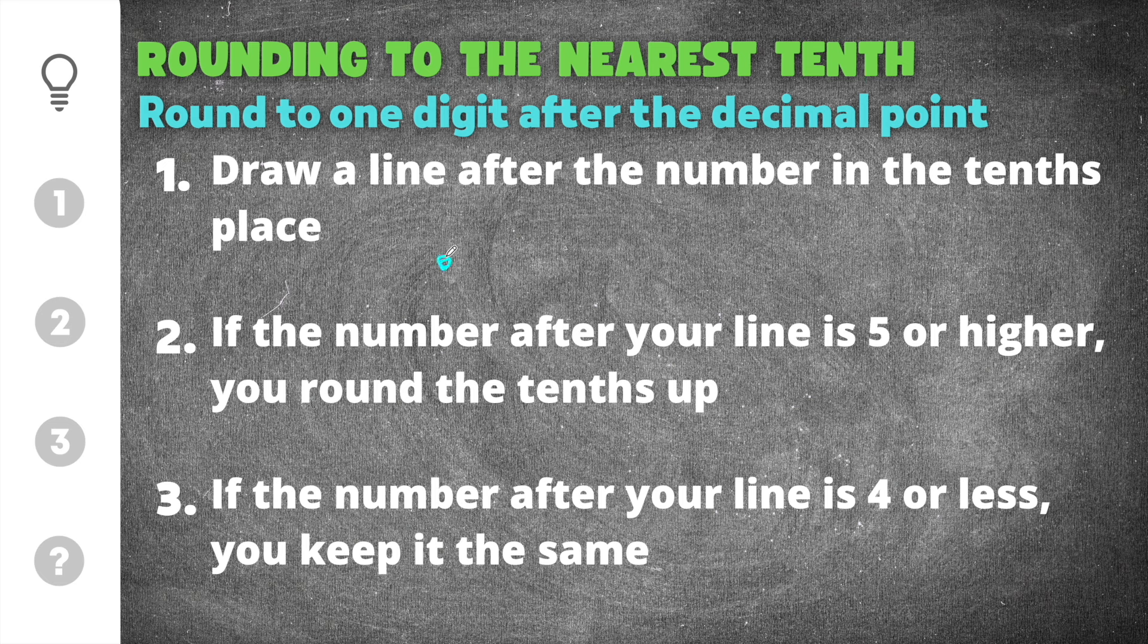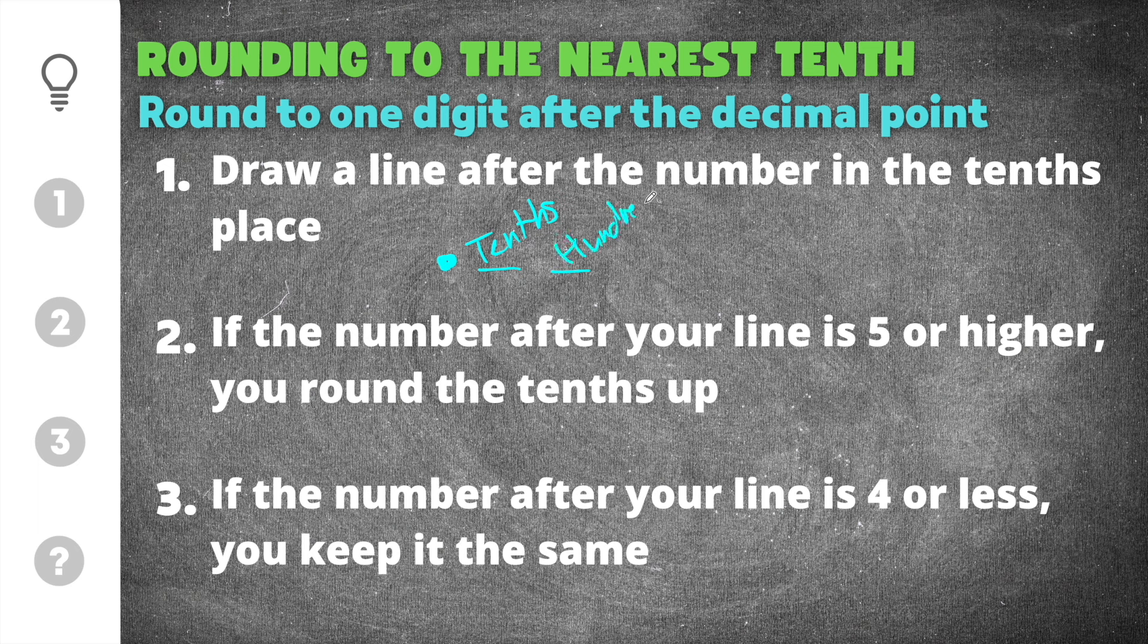If you can imagine we have a decimal point right here, we have digits after the decimal. This spot right here is called the tenths place, and this spot right here is called the hundredths.